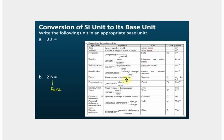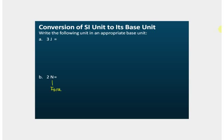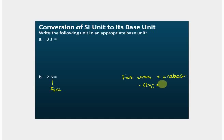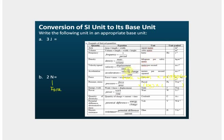Force equals mass multiplied by acceleration. The unit of mass is kg. Acceleration is a derived quantity, so to find its unit we need the equation for acceleration. From the list, acceleration equals change in velocity divided by time.